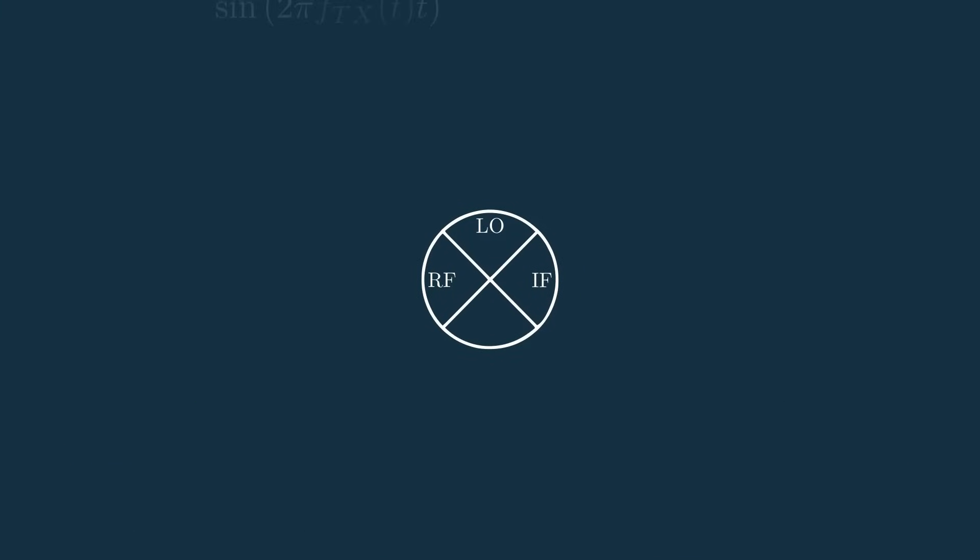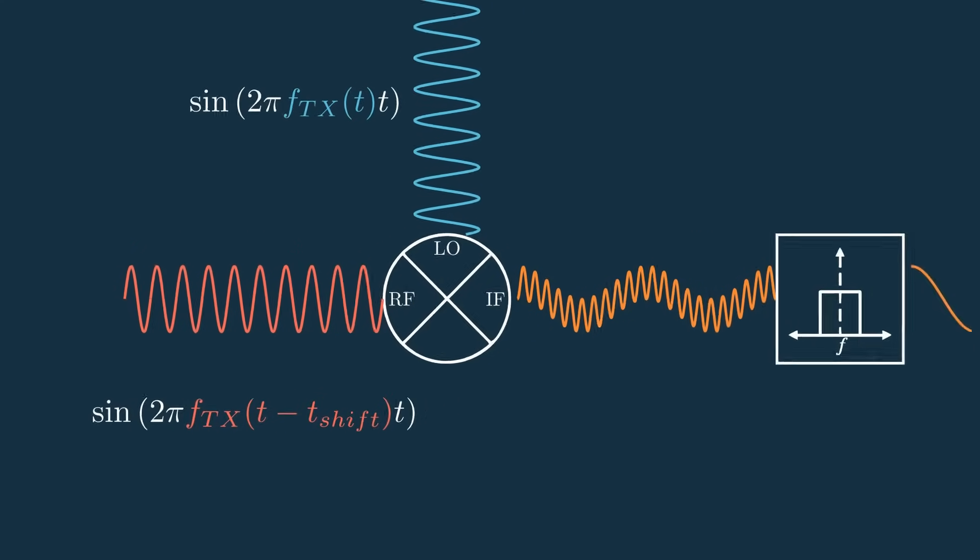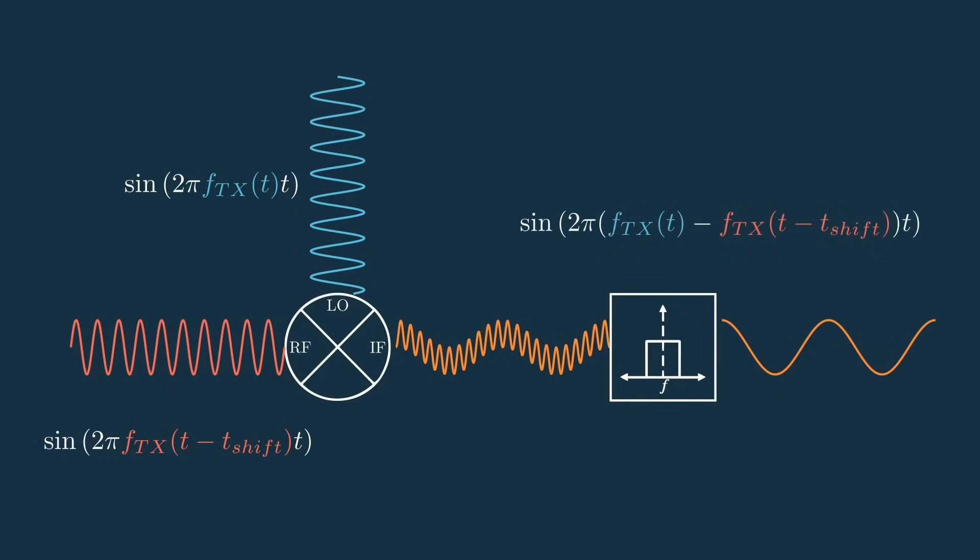So as a refresher, we have our transmit signal, then the signal that we receive after it's reflected, and then we take those and put them through a mixer to get the intermediate frequency that contains our beat signal and a larger frequency term. We then pass it through a low-pass filter and get our isolated beat signal.